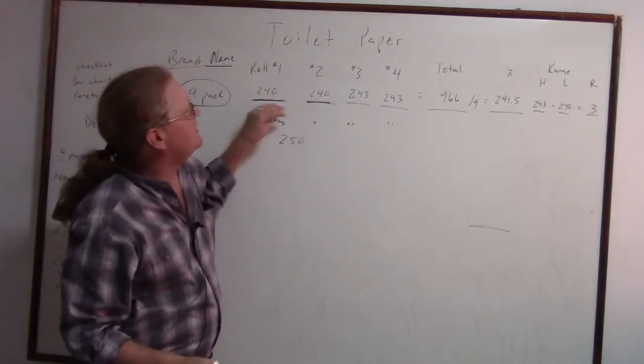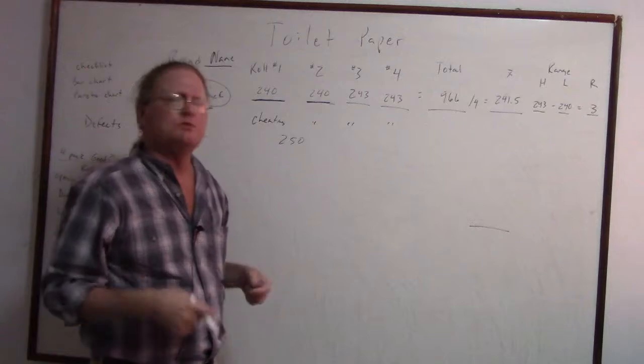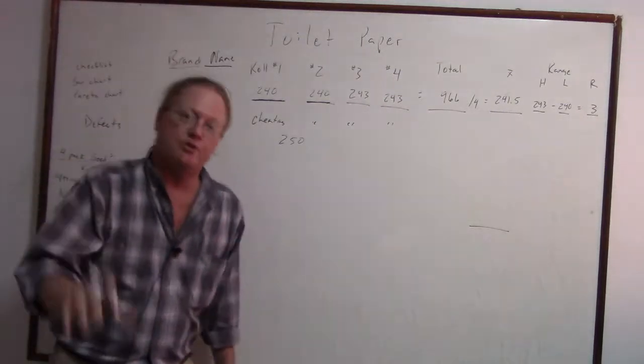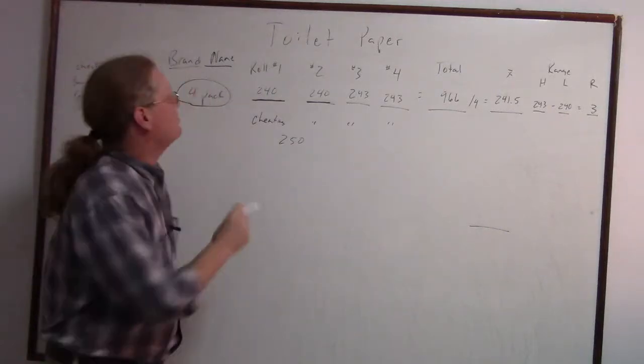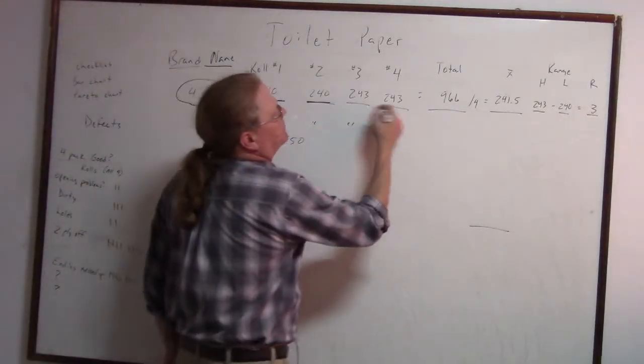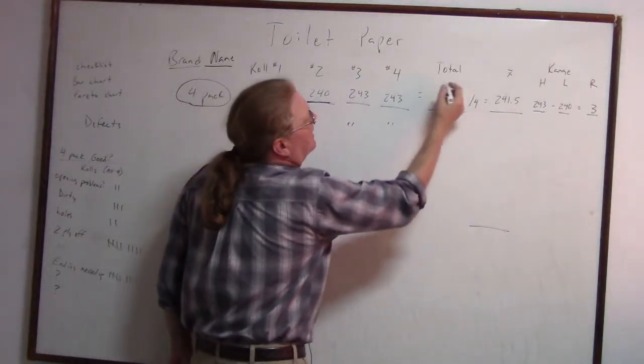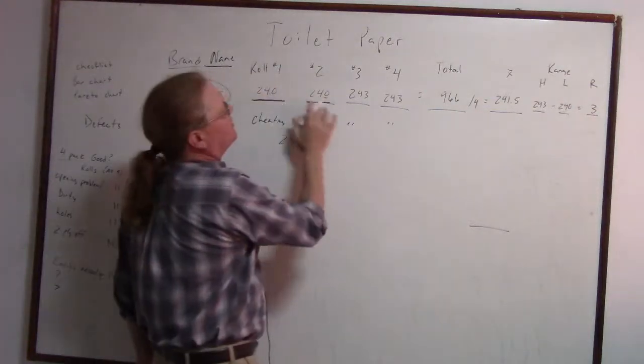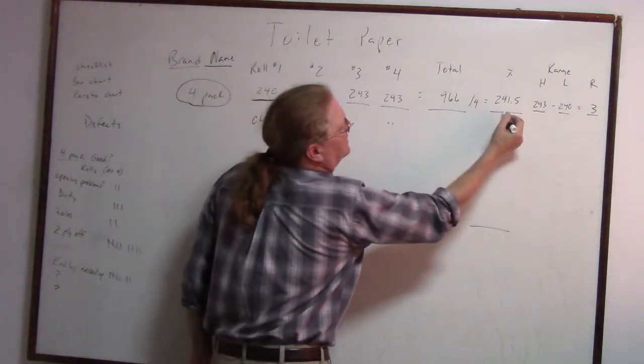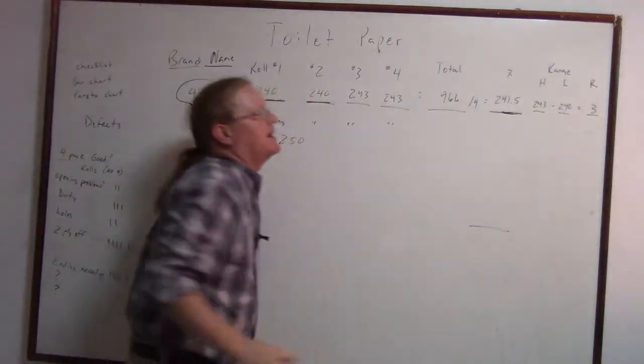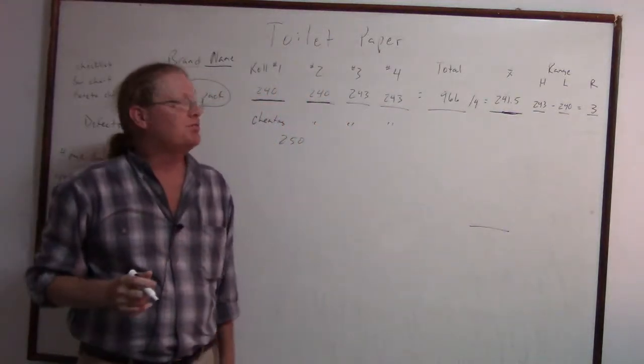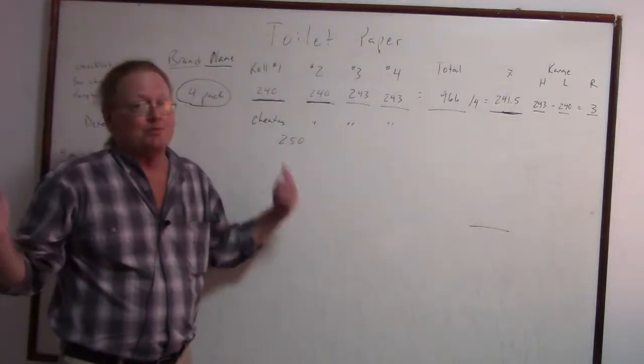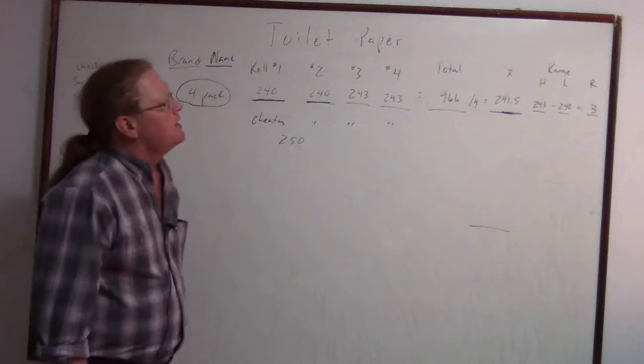Now, we're going to take this sample. This is like a random sample of four. You went to the store or you're on the production line and you grab a sample set of four rolls and you're going to do all of this. So let's count them up. Put them on here and then we're going to get the total and then we're going to divide it by four because there's four of them and we get the average. In this case, the average was 241.5 sheets on a roll. This means that they're cheating.